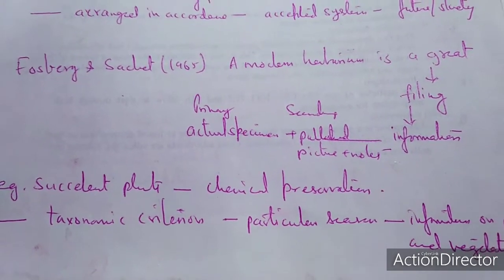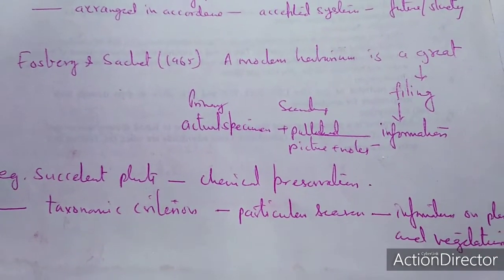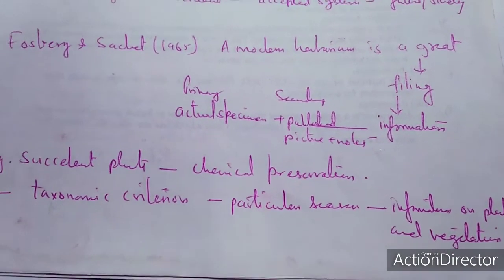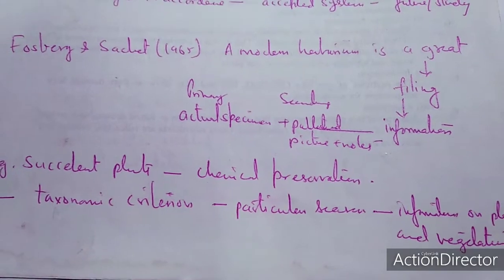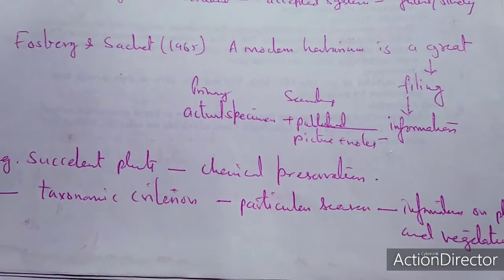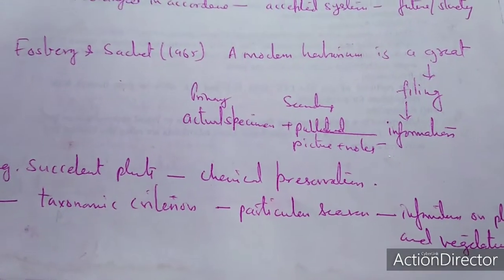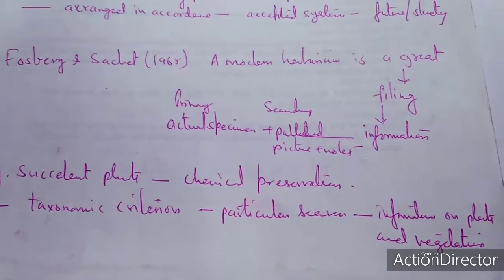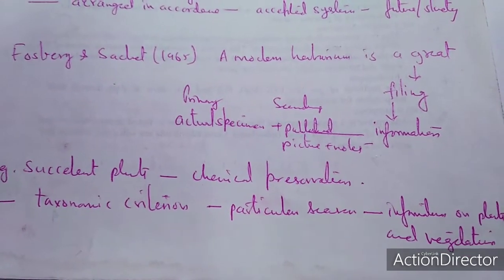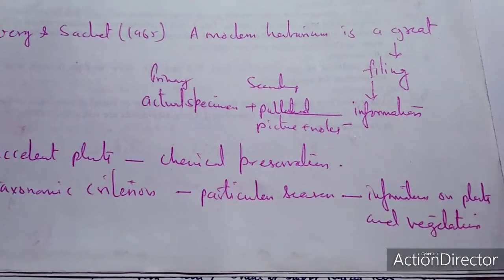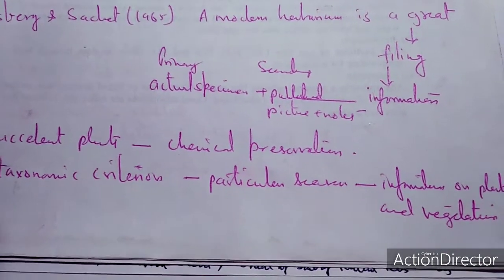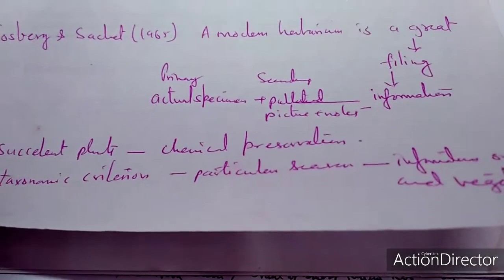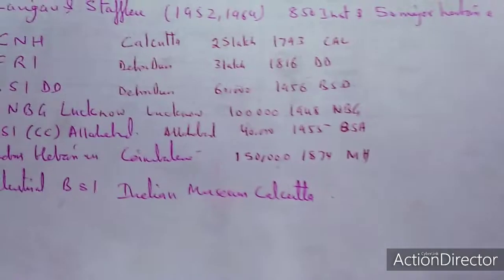Chemical preservation techniques have been used for succulent plants. Taxonomical criteria are important — for example, if you are going to the forest, you must remember what season is required, because you need a particular season for the collection of plants. The rainy season is where more herbs can be found in the forest. The herbarium also defines what type of vegetation has been present in a particular place.